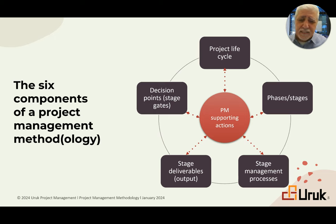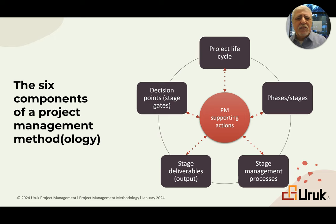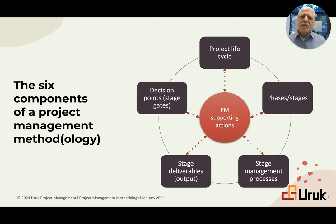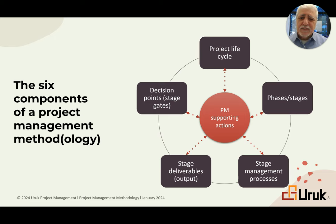The sixth component is supporting actions, placed in the middle because it touches all the others. Supporting actions include scope management, cost management, quality, risk management, and so on. When making a decision at a stage gate, we consider risk. When managing a stage, we manage the scope of that stage. And when defining the output, it likely includes scope, cost, and schedule. So these are the six components of a project management method or methodology.